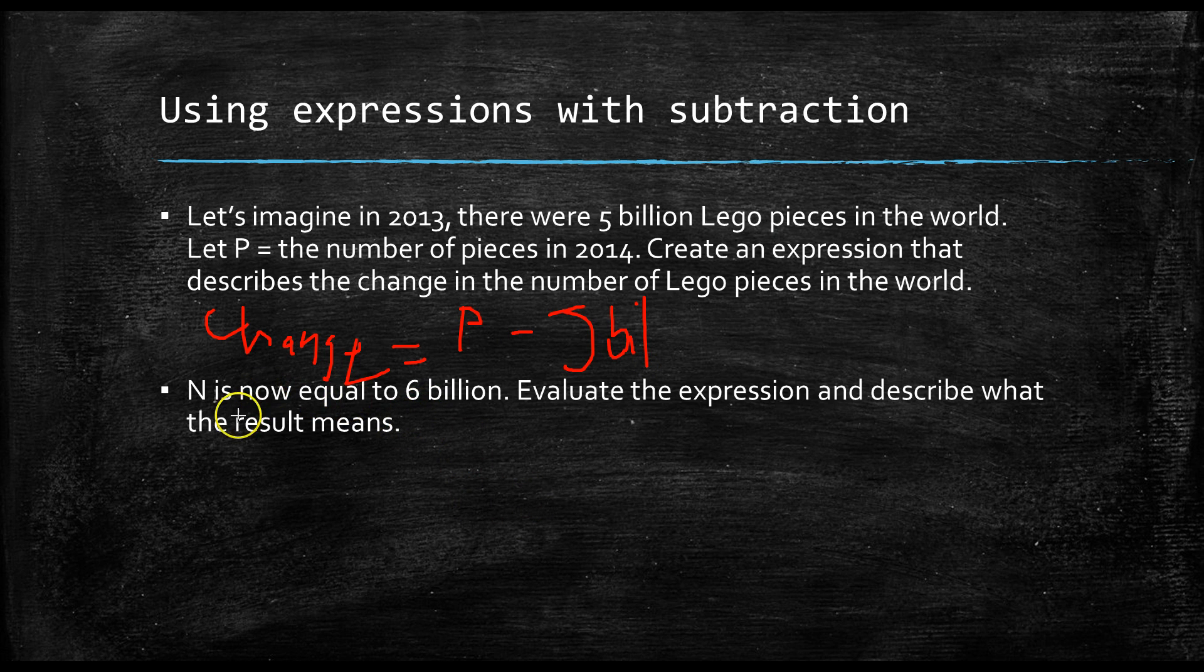Now, p is now equal to 6 billion. Evaluate the expression and describe what the result means. Let's substitute 6 billion into here. And 6 billion minus 5 billion is equal to 1 billion. So, the answer is 1 billion, because we substituted 6 billion into there. If 6 billion goes in here, minus 5 billion, the answer is 1 billion.